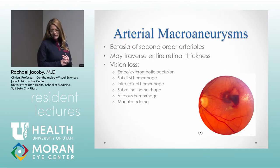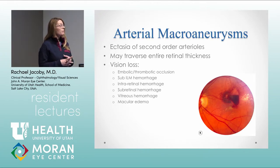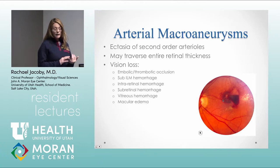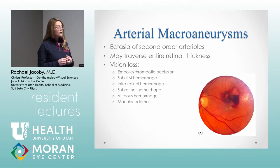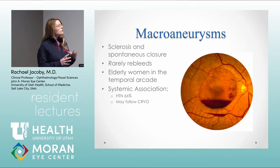Moving on to arterial macroaneurysms. The key thing always tested is that macroaneurysms can cause blood throughout all layers of the retina — subretinal, intraretinal, preretinal, and vitreous hemorrhage. They're typically seen in second-order arterioles and can traverse the entire retinal thickness. Patients can get macular edema, macular fibrosis, and vision loss from large hemorrhages. They typically spontaneously sclerose and thrombose on their own, so often no treatment is needed.